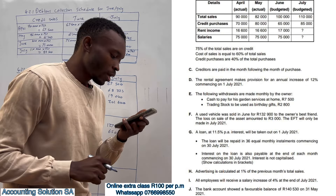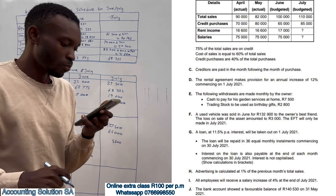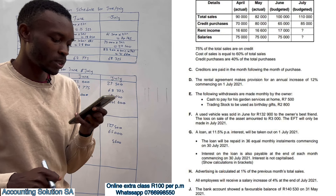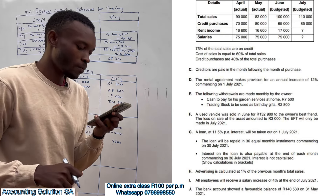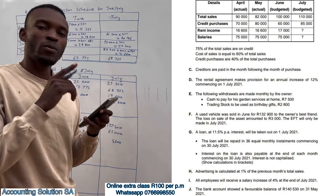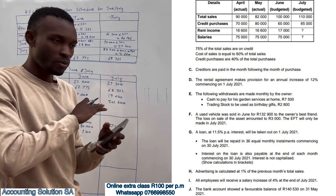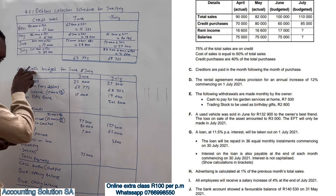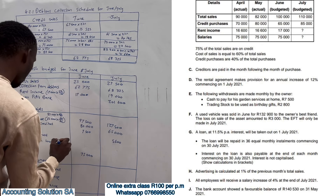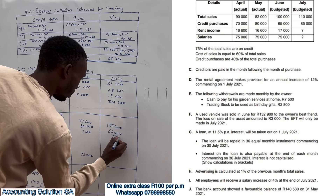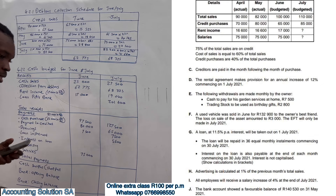The following withdrawals are made monthly by the owner: cash to pay for his garden service at home is 7,500, and trade stock is 2,800. We only take cash items here since it's a cash budget — so we include drawings of 7,500 only.